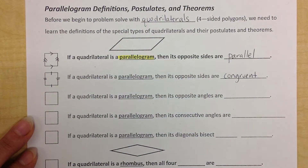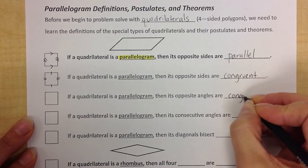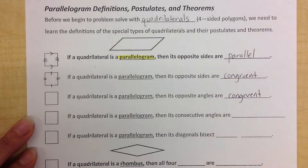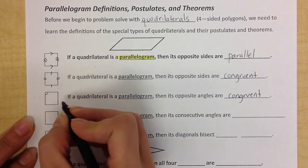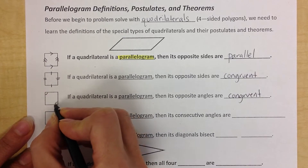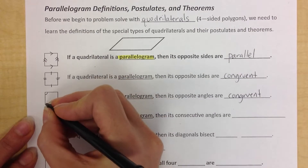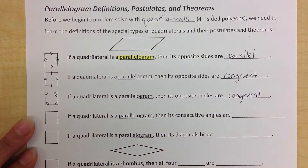If you know something's a parallelogram, you'll also know that the opposite angles are congruent. Remember, congruent means the same. So this angle will be the same as this angle, and this angle will have the same measure as this angle.